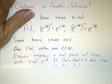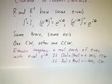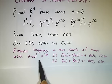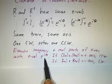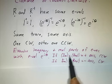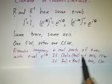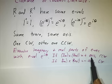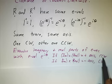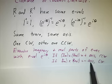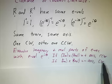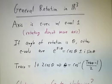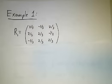You have to look at the eigenvectors. Take the eigenvector with eigenvalue e^(iθ), take its imaginary part, cross the real part — if that cross product points in the direction of your axis, it's counterclockwise; if it points opposite the axis, it's clockwise. That's a subtle point, but the important thing is to find the angle of rotation.